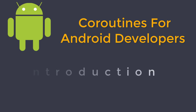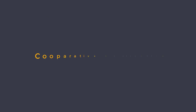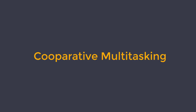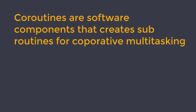In Computer Science, there are two types of multitasking methods to manage multiple concurrent processes. In one type, the operating system controls the switch between processes. The other type is called cooperative multitasking, in which processes control their behavior by themselves. Coroutines are software components that create subroutines for cooperative multitasking.